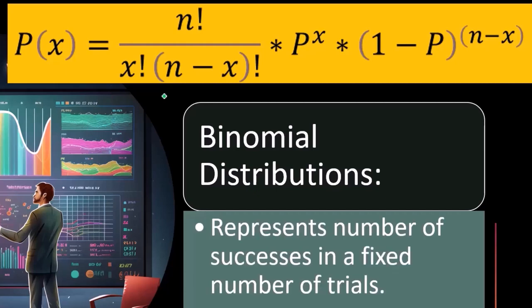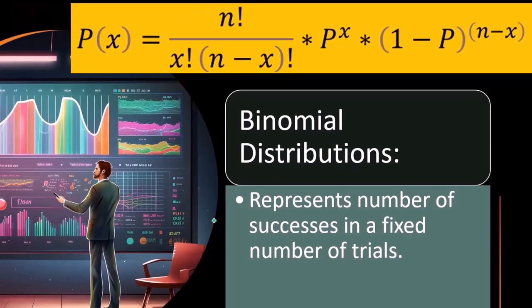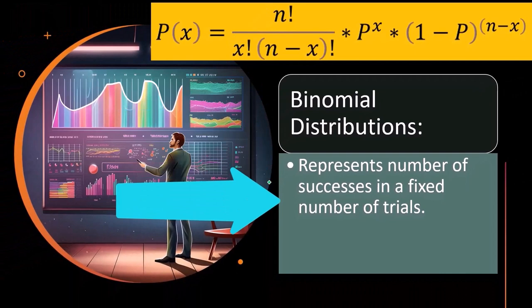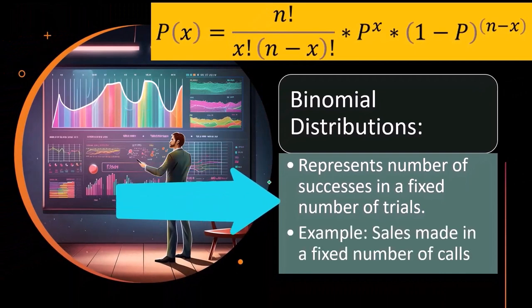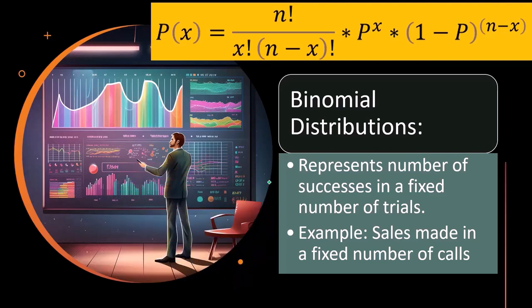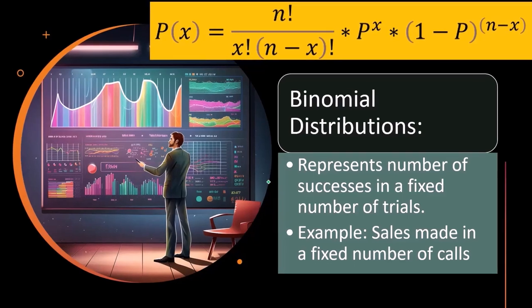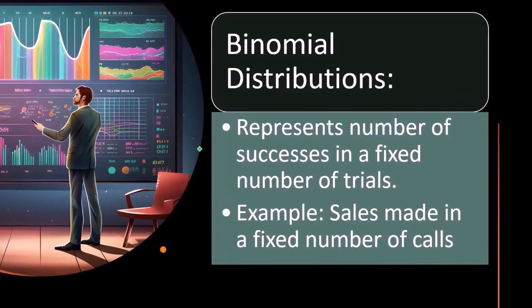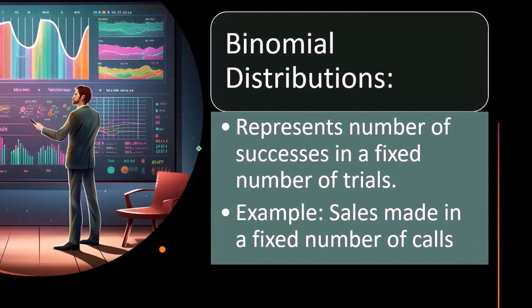This represents the number of successes in a fixed number of trials. We'll take a look at examples like sales made in a fixed number of sales calls. Usually the characteristics of this kind of distribution will be that there's got to be something that has like a yes or no outcome to it.